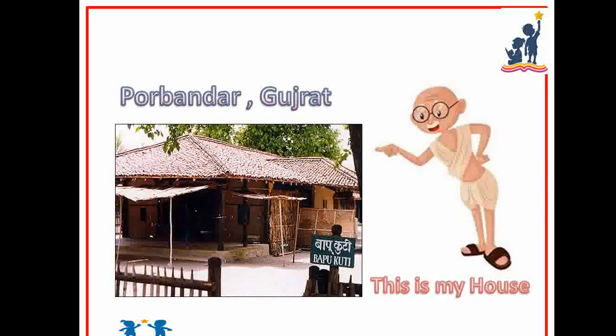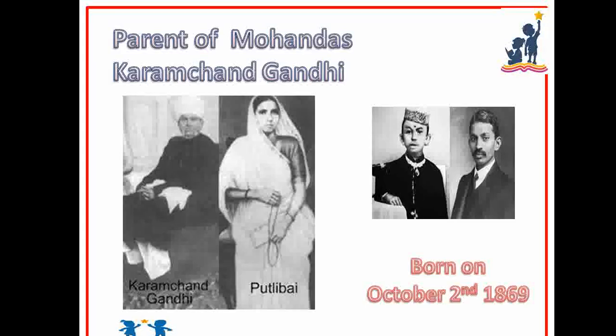This is Bapuji's house. It is located in Porbandar, Gujarat. These are the parents of Mohandas Karamchand Gandhi. His father's name was Karamchand Gandhi and his mother's name was Putlibai. Gandhiji was born on 2nd October 1869.